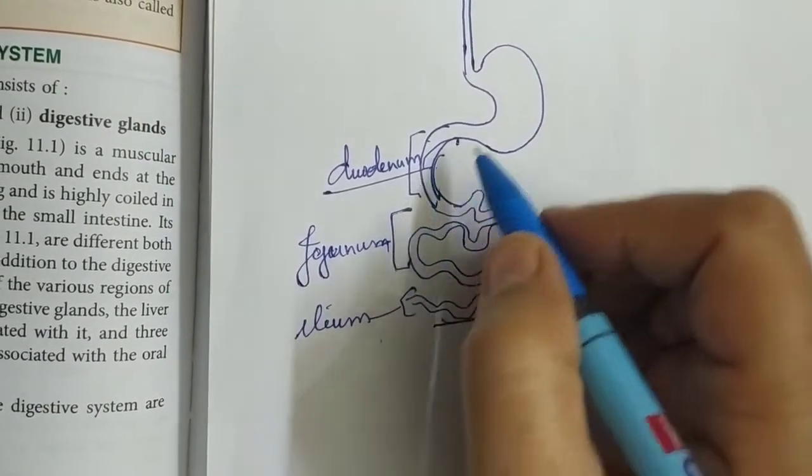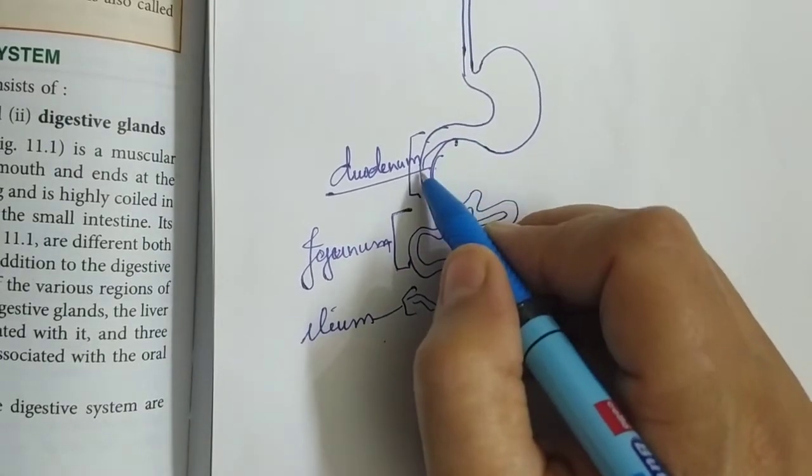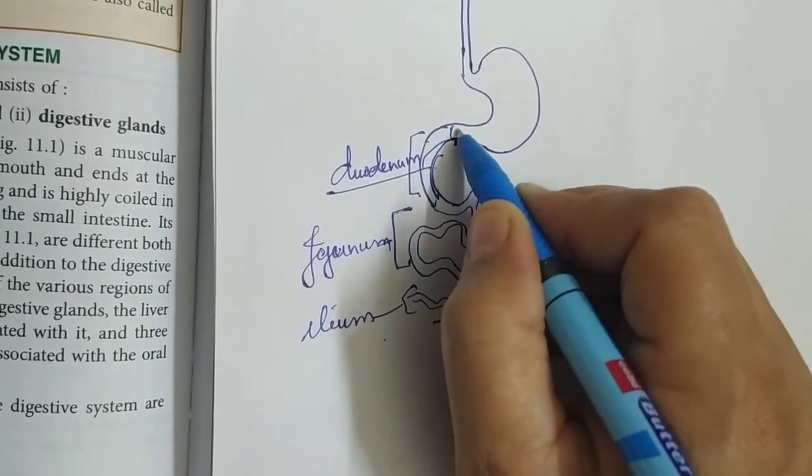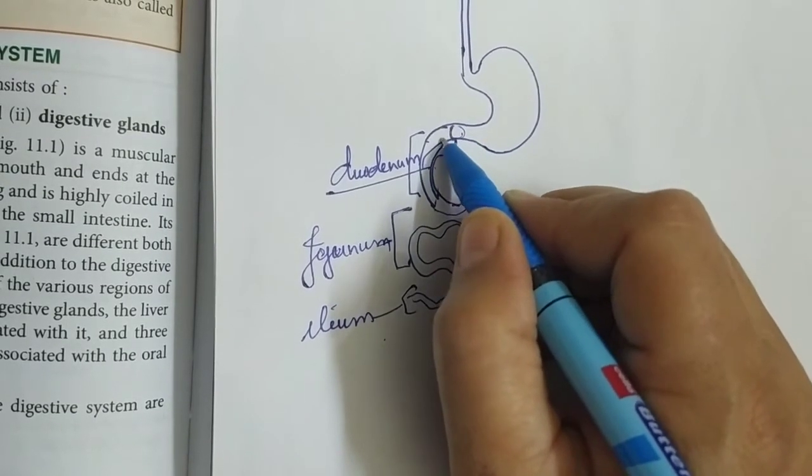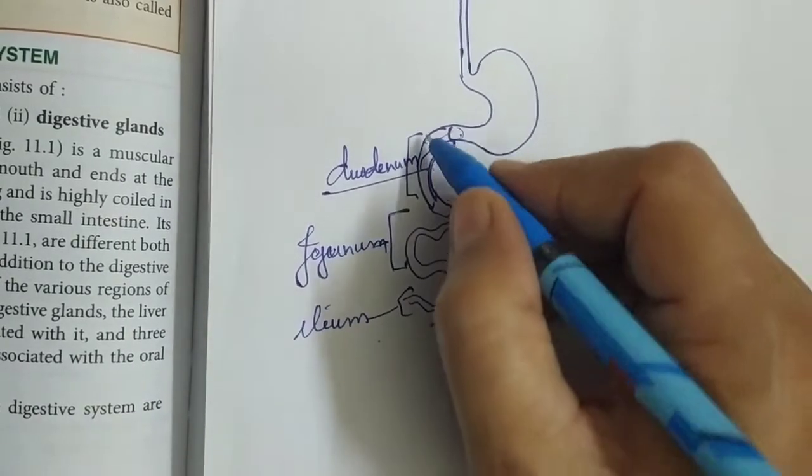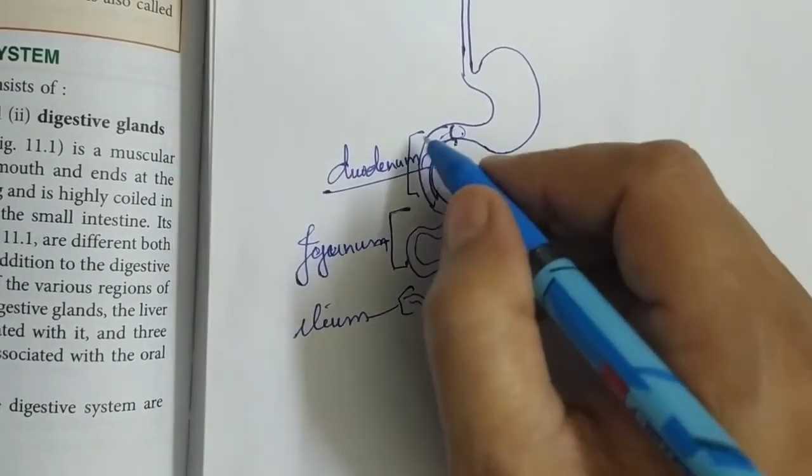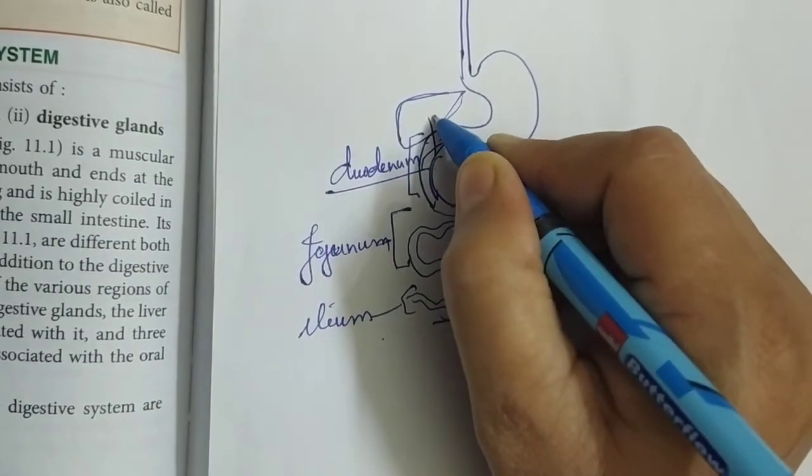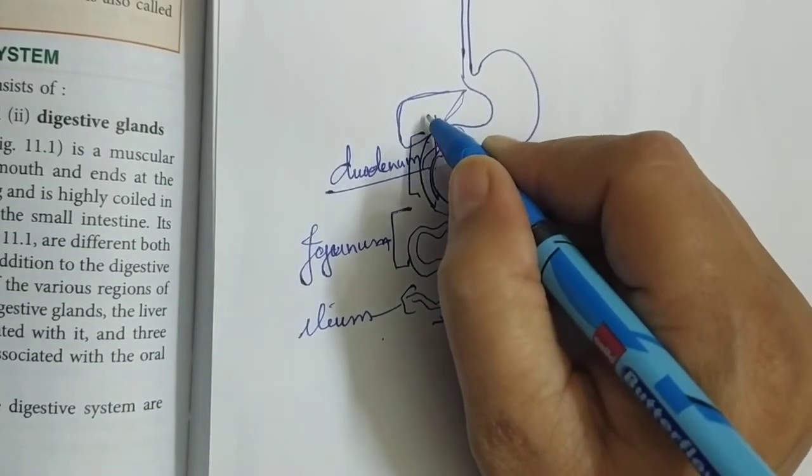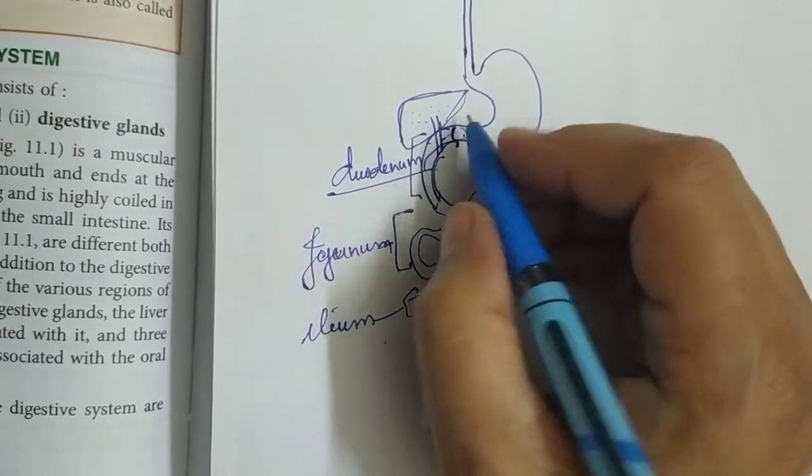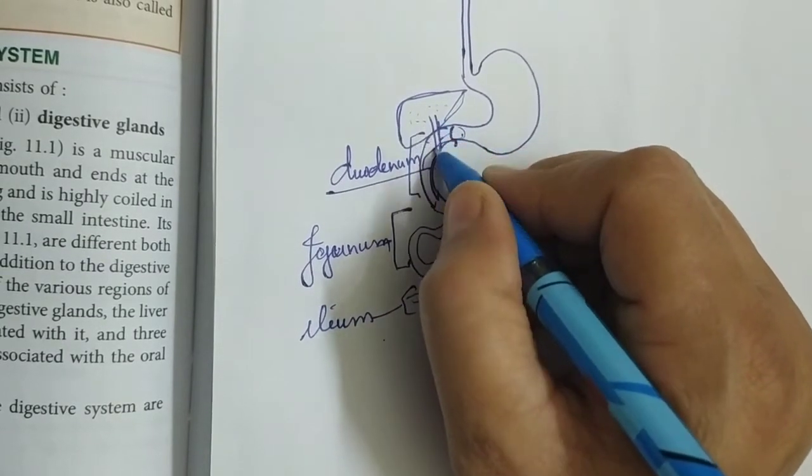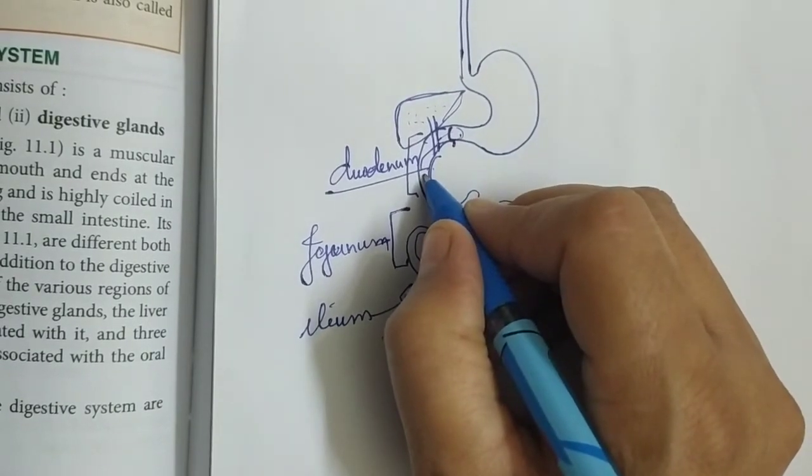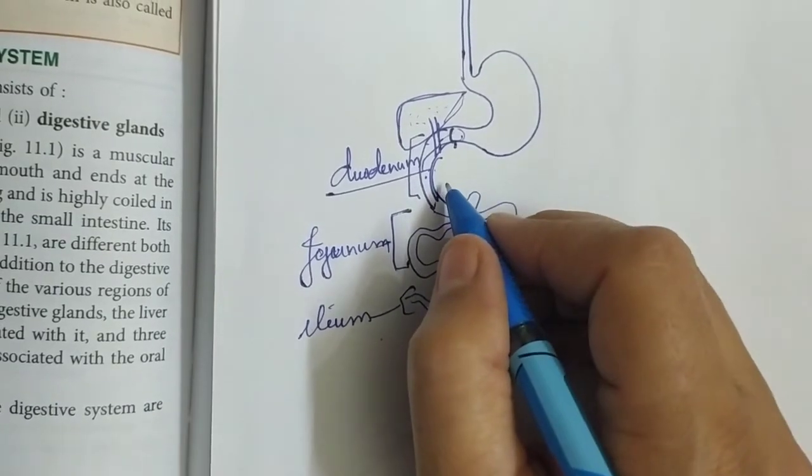Now if we talk about duodenum, as I told you, duodenum receives the semi-digested food from the stomach and here there is a sphincter which will not allow the regurgitation, the backflow of the food. So duodenum receives two ducts. One duct is from the liver which brings the juices of the liver and we call it bile juice. You all know that liver secretes bile and that bile is brought by a common duct. We call it common bile duct. It opens in the duodenum and this bile helps in the further breakdown of the food.